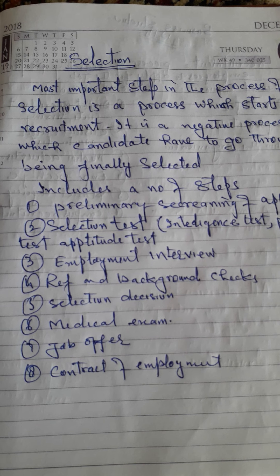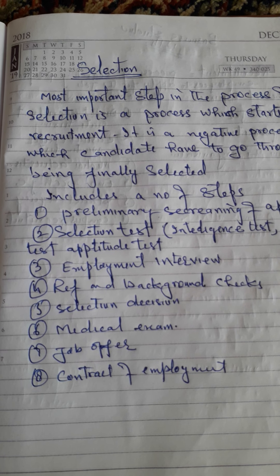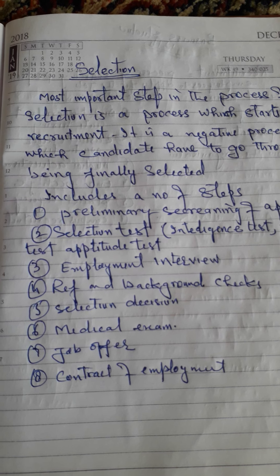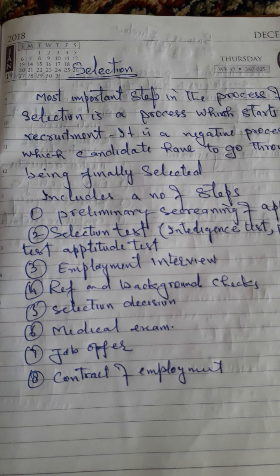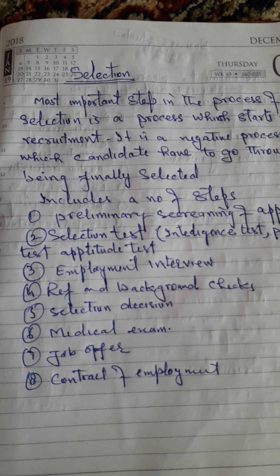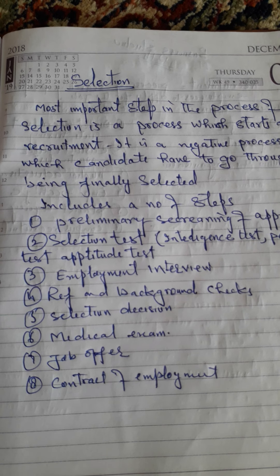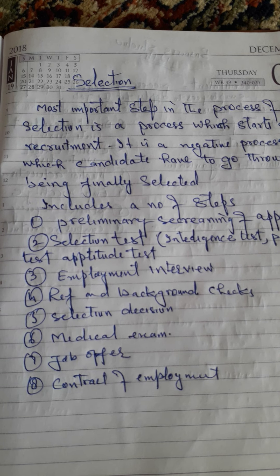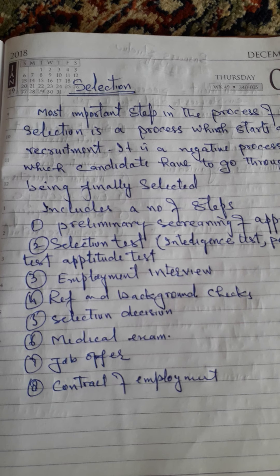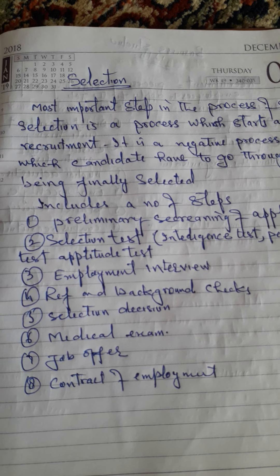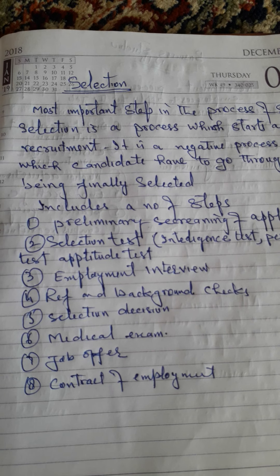Selection is the most important step in the process of staffing. Staffing means putting the right person at the right job. For putting the right person at the right job, first we have to assess the manpower requirement, then we have to make advertisements — that is recruitment — and after the advertisements have been made, the selection process starts.